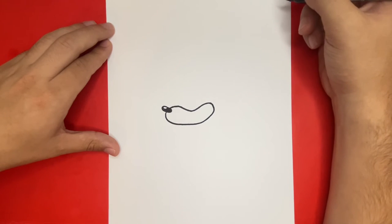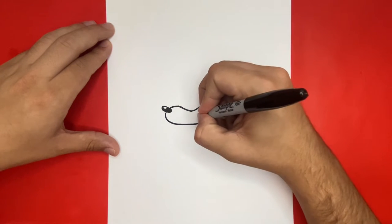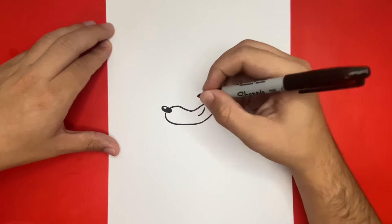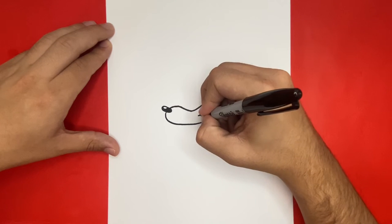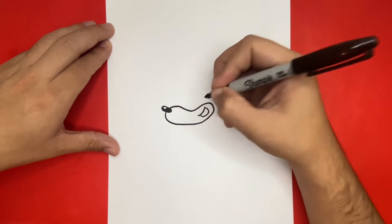Now on the inside of that shape that we just drew, we're going to want to draw the outline of the mouth towards the right-hand side. Nicely done.